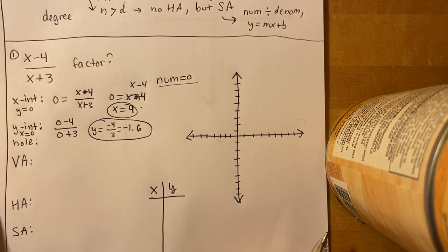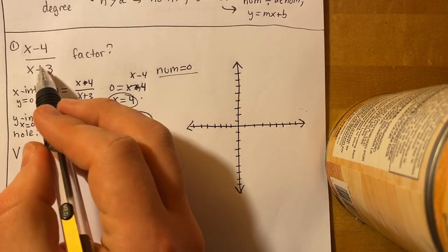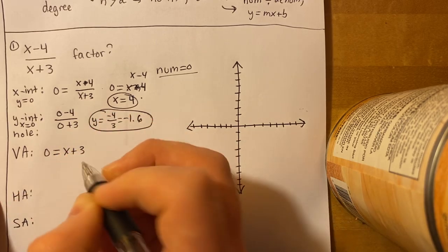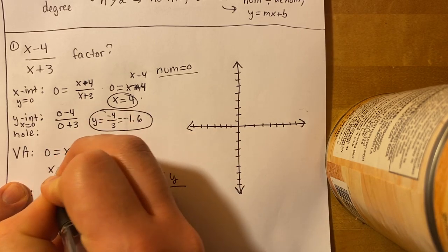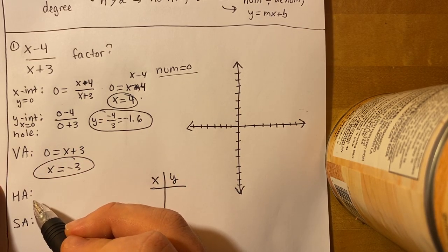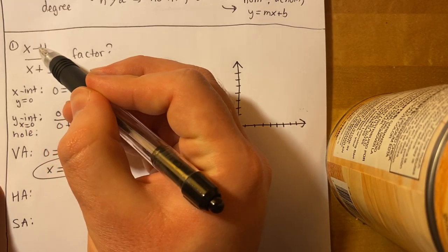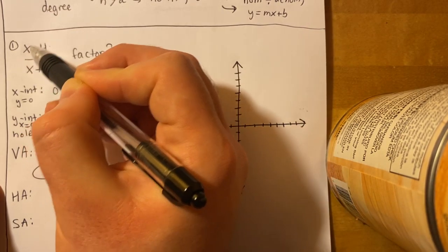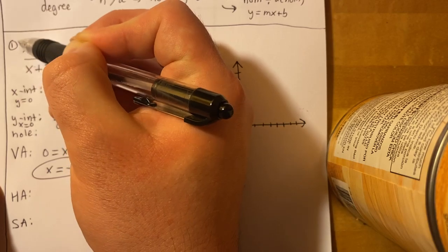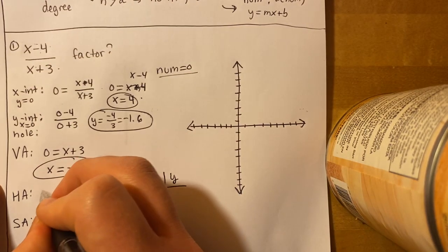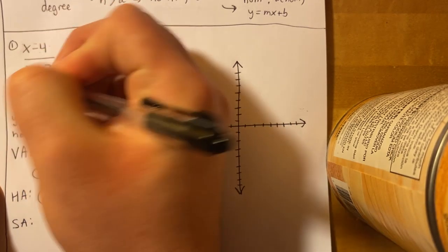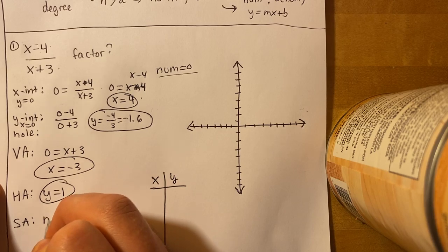For the vertical asymptote, we look at the denominator, which is (x + 3). Setting it equal to zero gives x equals negative 3 — that's our vertical asymptote. For the horizontal asymptote, we compare degrees: the numerator degree is 1 and the denominator degree is 1, so they're equal. We divide the leading coefficients: 1 over 1 equals 1, so the horizontal asymptote is at y equals 1. There's no slant asymptote, and since we didn't cancel anything, there are no holes.